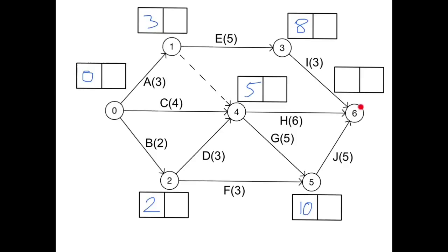And finally, event 6. We've got 3 activities feeding into that one. So if we're at 3 with a start time of 8 plus 3, that would be 11. 5 plus 6 would also be 11. But 10 plus 5 means that the earliest time we could be there is at 15. And that completes the forwards pass.